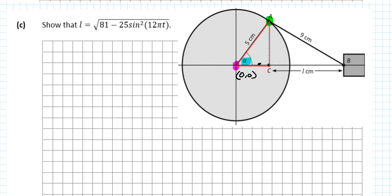For this question, it says show that L equals square root of 81 minus 25 sine squared 12πt. That 12πt is referencing back to the previous question. We're getting the length of L in terms of t, the length of L at any time. So we're probably going to end up using this triangle here, another right angle triangle. We know this is going to be the hypotenuse L here. And that length was our 5sinα.